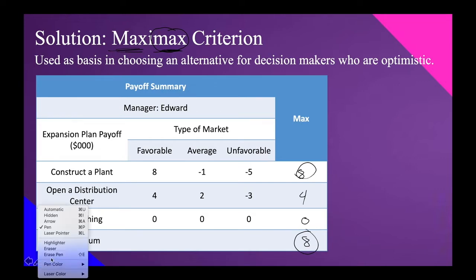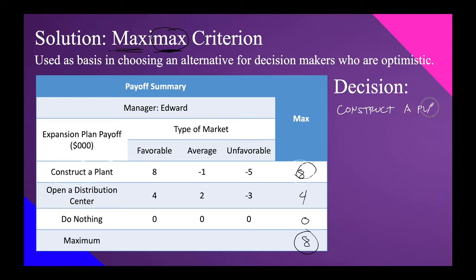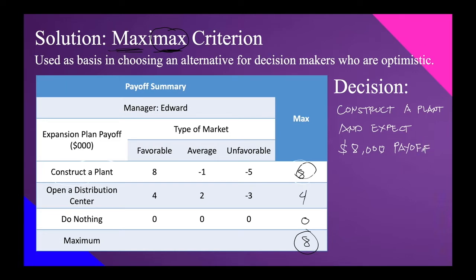The decision for Edward is to construct a plant, since that is where the maximum of maximums — 8 — is located. Edward's decision: construct a plant and expect a payoff of $8,000. This is the result under the Maximax Criterion for Edward as the first manager.